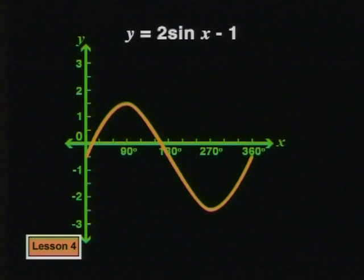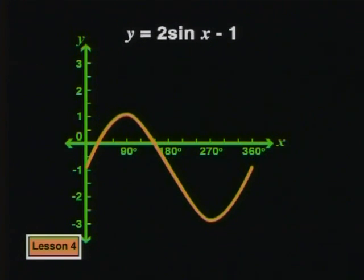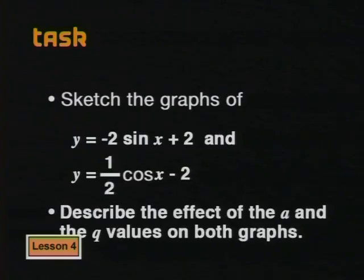The shift down or up using the q value can be made afterwards. Sketch the graphs of y equals negative 2 sine x plus 2 and y equals half cos x minus 2.